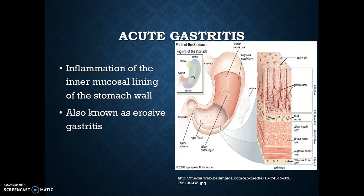To begin, there are four layers in the stomach wall, as you can see on this diagram. It contains the inner mucosa, submucosa, middle muscular layer, and the outer serous coat.